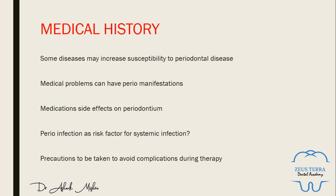We need to take precautions to avoid complications during periodontal surgery based on existing or previous conditions. This may include antibiotic prophylaxis, or modification of treatment if the patient is on antiplatelet or anticoagulant drugs. Treating certain conditions may also present a risk to the dental team — such as communicable diseases. For some patients, ultrasonic instrumentation should be avoided due to aerosol concerns. These are the key points to address in the patient's medical history.